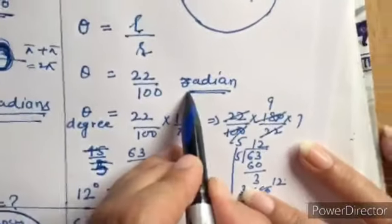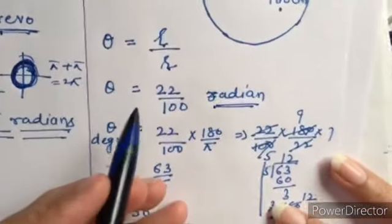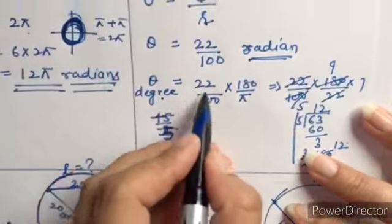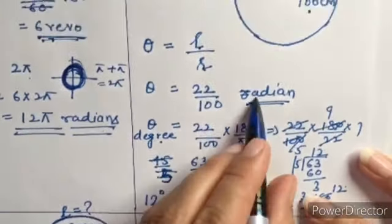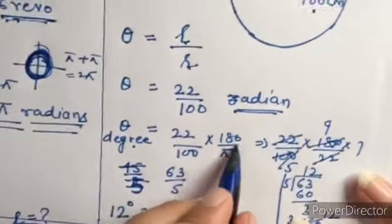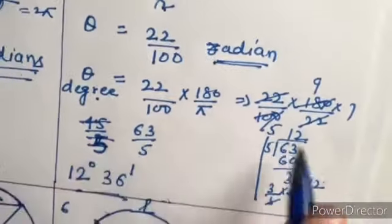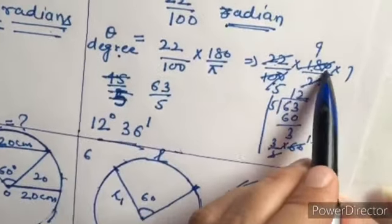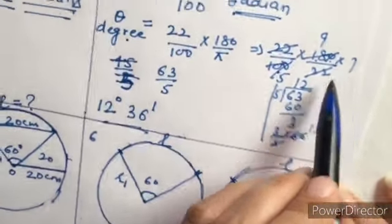The question demands the answer in degrees. So theta equals 22 upon 100. We convert radians to degrees by multiplying by 180/π, giving us 22/100 × 180/π, substituting π = 22/7.